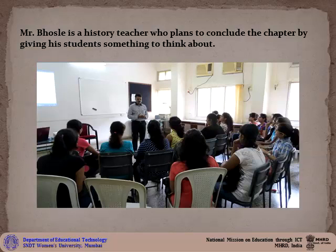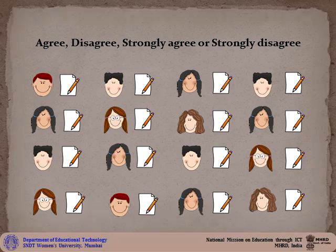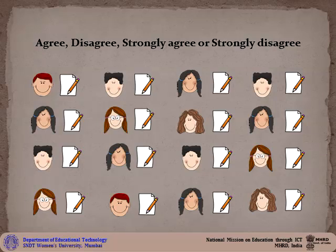He plans to conclude the chapter by giving his students something to think about. He writes a statement on the whiteboard, then gives his students four options to choose from. The options are agree, disagree, strongly agree, or strongly disagree.